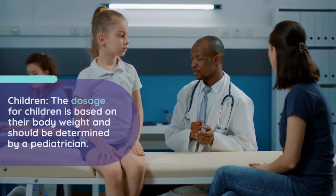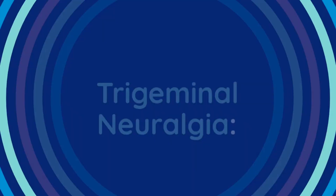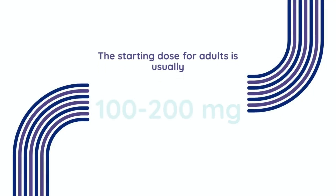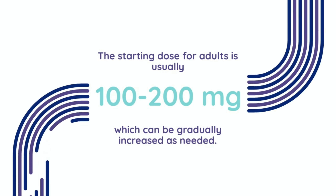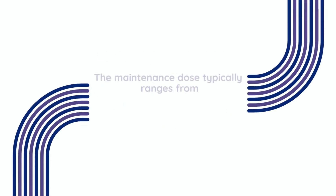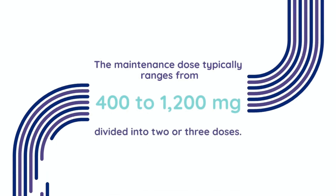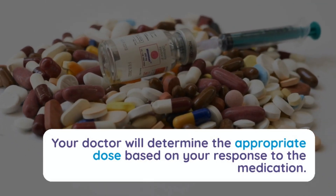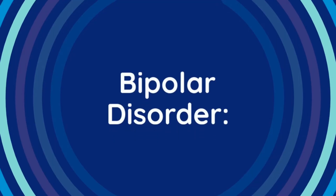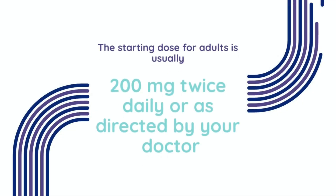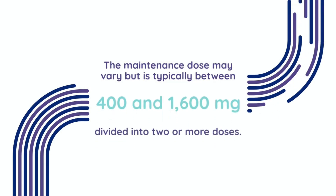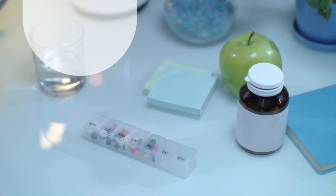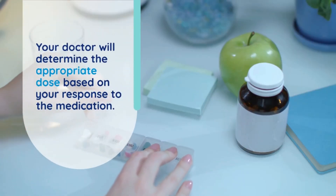The dosage for children is based on their body weight and should be determined by a pediatrician. In trigeminal neuralgia, the starting dose for adults is usually 100 to 200 mg twice daily, which can be gradually increased as needed. The maintenance dose typically ranges from 400 to 1,200 mg per day, divided into two or three doses. In bipolar disorder, the starting dose for adults is usually 200 mg twice daily. The maintenance dose may vary but is typically between 400 and 1,600 mg per day, divided into two or more doses.